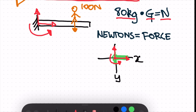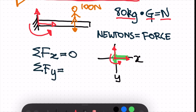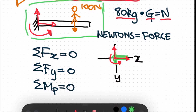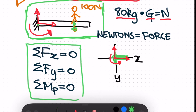Because our beam is not moving, we can say that the sum of forces in the x direction is equal to zero, the sum of forces in the y direction is equal to zero, and the sum of moments about a point is equal to zero. Even though this person is standing on the beam, the beam is not moving — it's fixed. So all the forces acting within this beam must equal zero, because we have no motion. These are our three equilibrium equations.